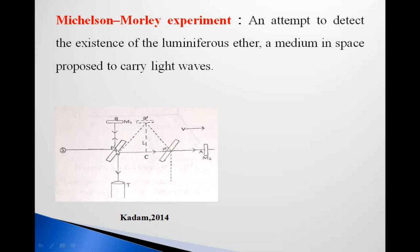Here mirror M1 and here mirror M2 — they are perpendicular to each other. Here is the telescope. From the monochromatic source, the light ray is incident on this glass plate at a 45-degree angle. At this point it gets reflected towards mirror M1, and some part is transmitted towards M2. The ray reflected from M1 goes back to point P, and the ray reflected from M2 also goes towards telescope T. Two rays go towards the telescope, where they interfere with each other and we get an interference pattern — we get fringes.